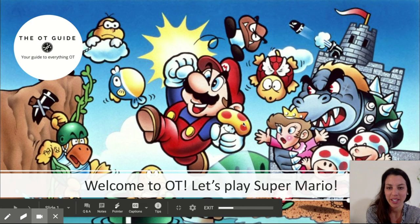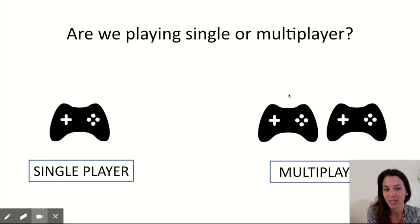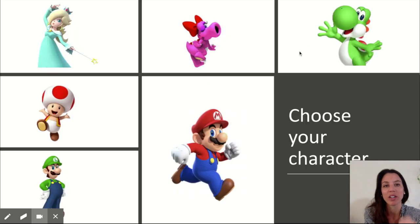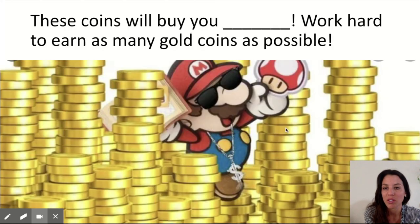Let me show you what this game looks like. Welcome to my Super Mario game — you'd be screen sharing at this point. We're just setting the scene. You ask the student: are we playing single player or multiplayer? If you're working individually, select single player; if working with a group, select multiplayer. This has no effect on the game — we're just making it feel like a game. Students get to choose and draw their character and have opportunities to collect gold coins by completing homework assignments.